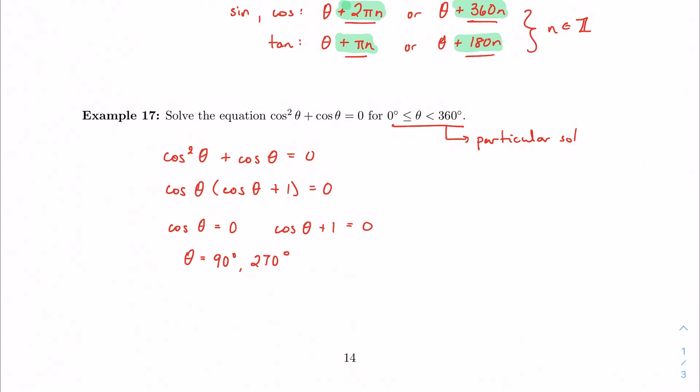And if I look at my second factor, I have cosine theta equals negative 1. And you might be thinking, I know that cosine of theta equals positive 1 when theta is 0. So cosine must be equal to negative 1 when theta is on the opposite side of 0, or 180 degrees. And because we're dealing with just this particular solution from 0 to 360, these are my three solutions. So my solutions are 90 degrees, 180 degrees, and 270 degrees.